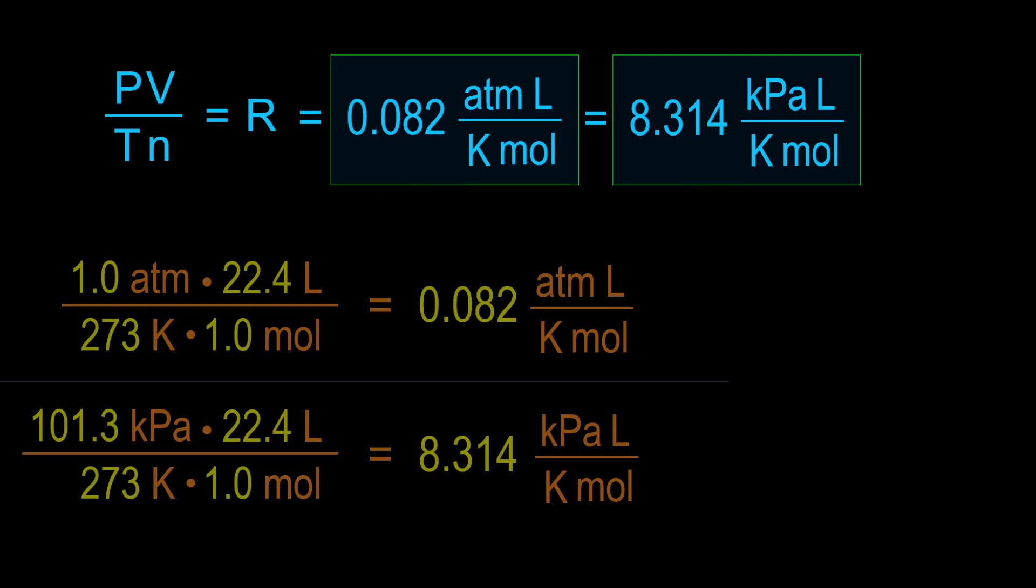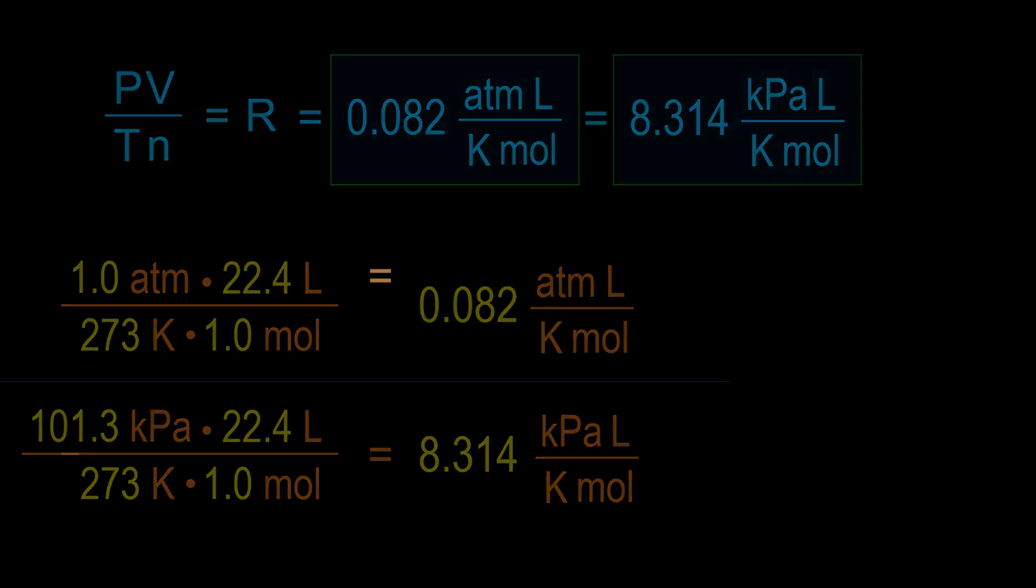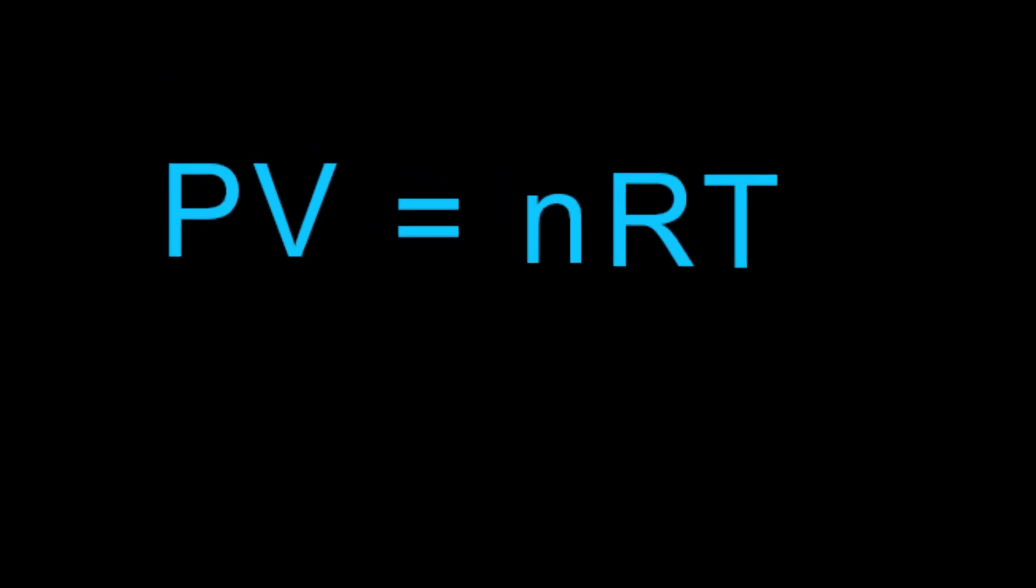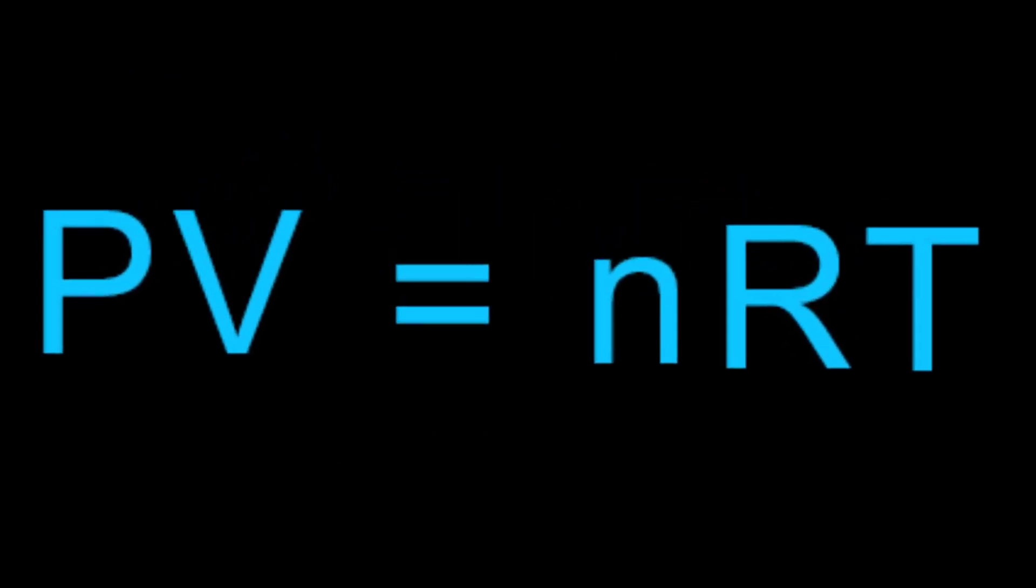Now we will go through four example problems to see how we can use PV equals NRT given various units and variations such as using mass and molar mass.